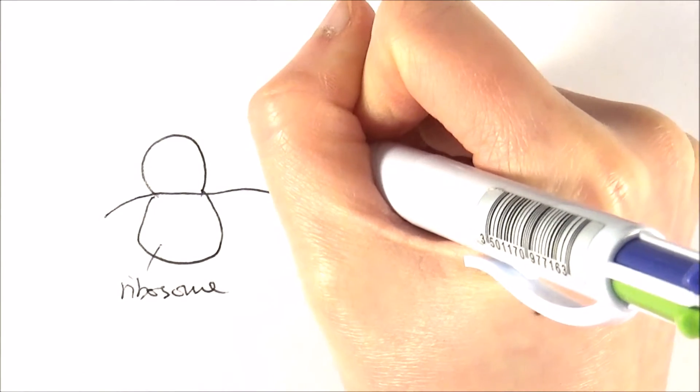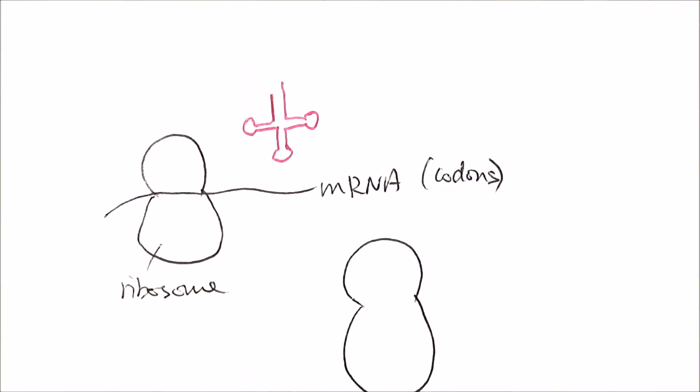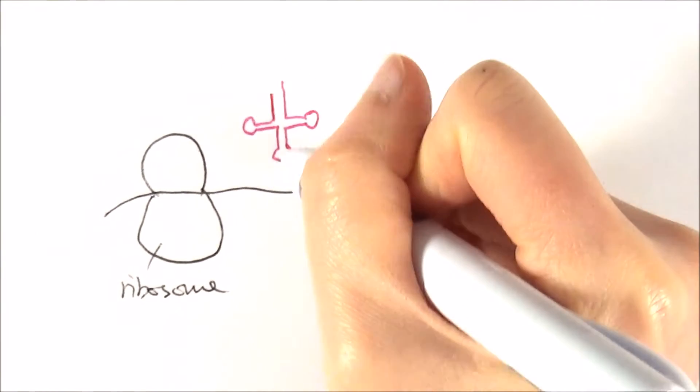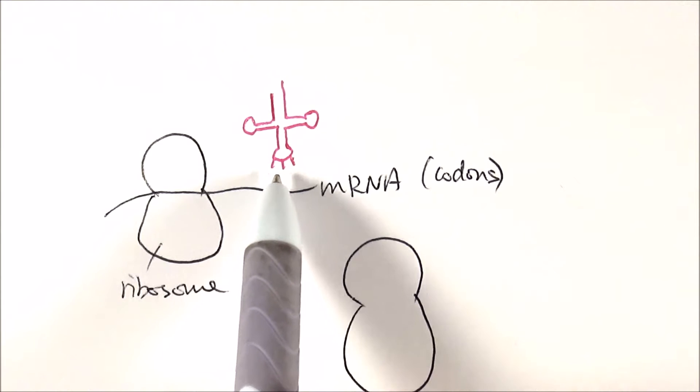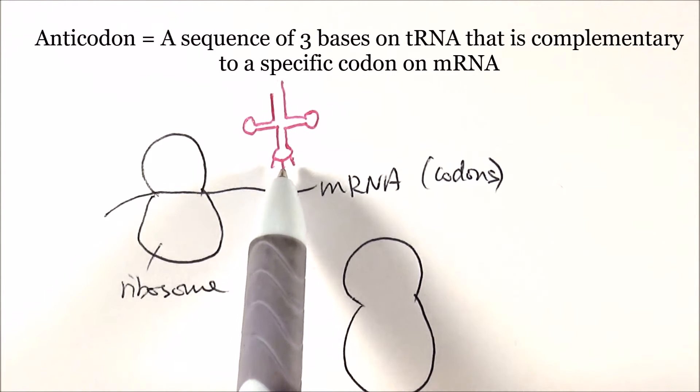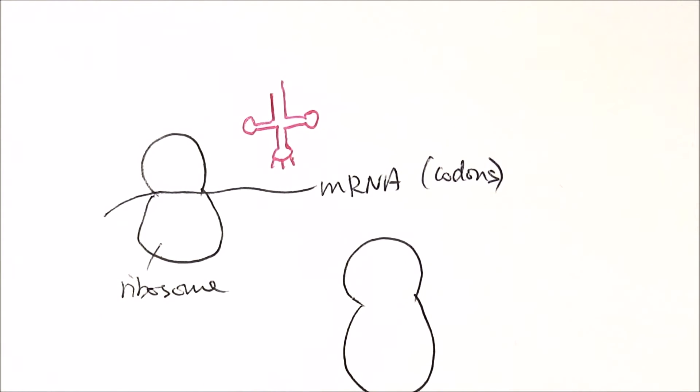Now we have another component called transfer RNA or tRNA. What's special about tRNA is that they're made up of RNA nucleotides, and they have three bases at the bottom called anticodons. These anticodons are complementary to the codons.